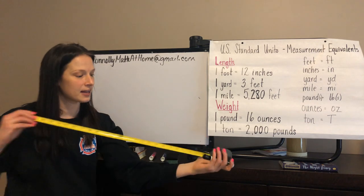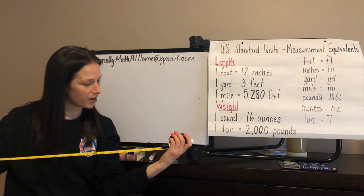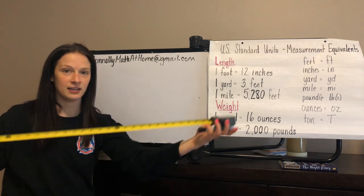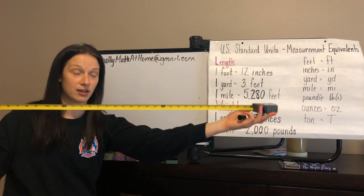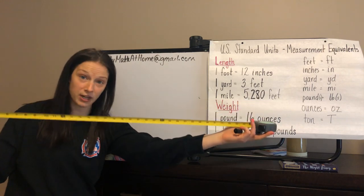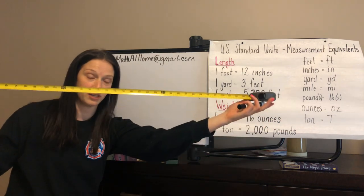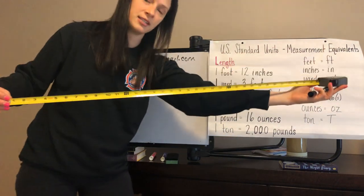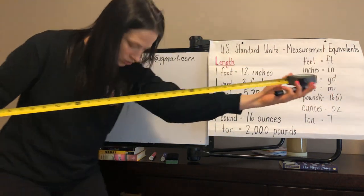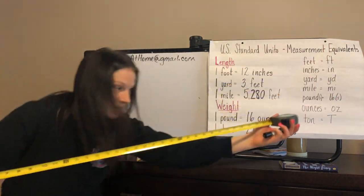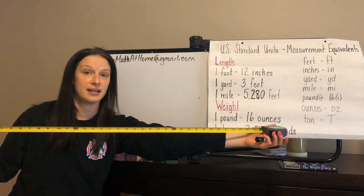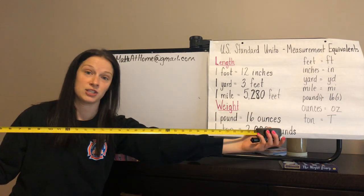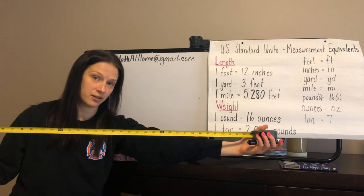The next measurement we talk about — and if you're a football fan, you hear this on TV all the time — is one yard. This is one yard, from here to here. One yard is the same as three feet. So inside one yard there are three feet. And since there are 12 inches in each foot, there are 36 inches in one yard.